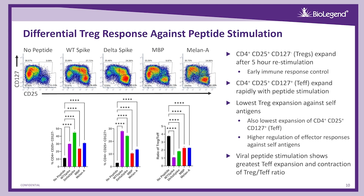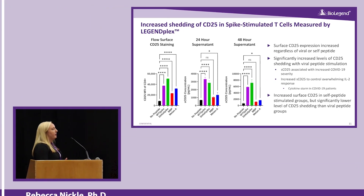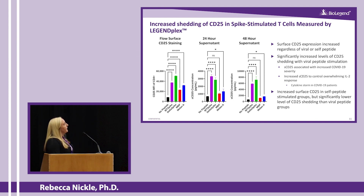Interestingly, there was the lowest Treg expansion with self-antigens, which is great — it means they're having a good, regulated response to self-antigens. When we plot the ratio of Tregs to T-effectors, we can see a great contraction of the Treg-to-T-effector ratio with viral peptides that is not as pronounced with self-peptides. We can also see that there is a great expansion of CD25 expression on all peptide-induced cells, and both viral and self-peptides have an increased per-cell basis expression of CD25 among CD4s.